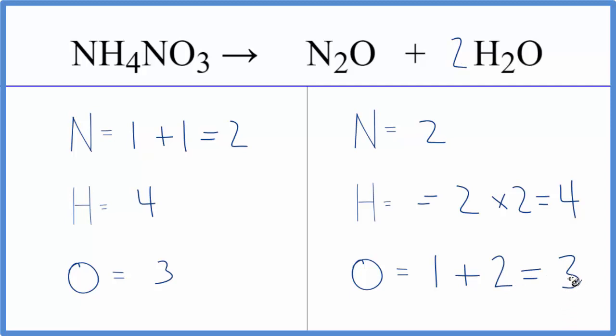The key with this equation, where people almost always have their problems, they might count this nitrogen and forget this one, or they count this oxygen here and they forget about this oxygen, and that makes it very difficult to balance.